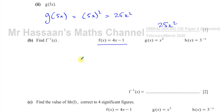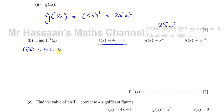The inverse of a function basically does the opposite, or undoes the function. The way to find the inverse is an algebraic method. Basically what you do is you take the function f(x) = 4x minus 1 and you call f(x) equal to y. So you have y = 4x minus 1.